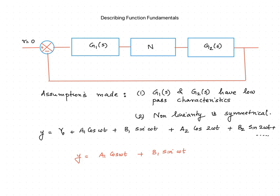Second, the non-linearity is a symmetrical one — as seen earlier, the on-off relay is symmetrical about the x-axis. When input x is given, the output y will have a number of frequency components. By the Fourier description, y can be expressed as y₀ + a₁cos(ωt) + b₁sin(ωt) + a₂cos(2ωt) + b₂sin(2ωt) + etc. Since G1(s) and G2(s) have low-pass characteristics, higher harmonics are eliminated as the output passes through them. And since the non-linearity is symmetrical, the average component y₀ equals zero and is also eliminated.